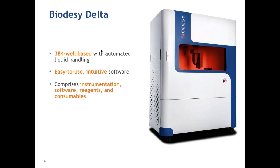We recently, as of July, launched a commercial instrument — the Biotisi Delta. The Delta is about the size of a refrigerator, easy to use, has intuitive software, a custom 384-well microplate, and high throughput. The throughput is roughly an hour per 384 wells, so you can make 384 measurements in that time and look at thousands of interactions of your protein with small molecules, drug compounds, other proteins, and other ligands in a single day.